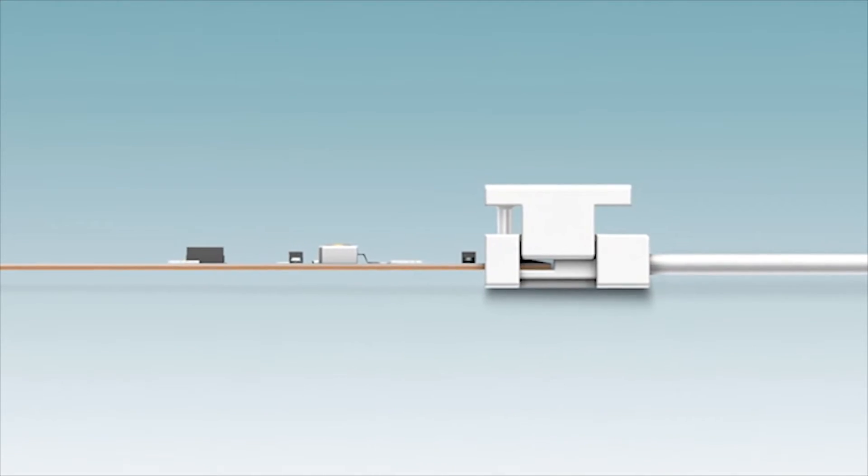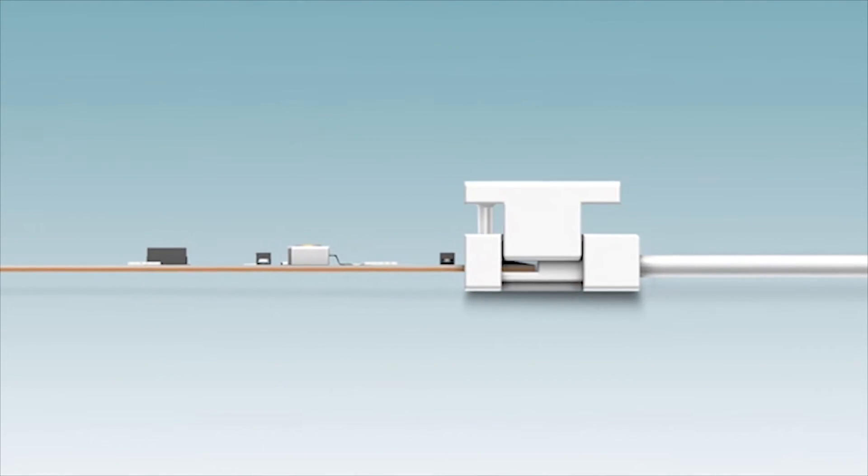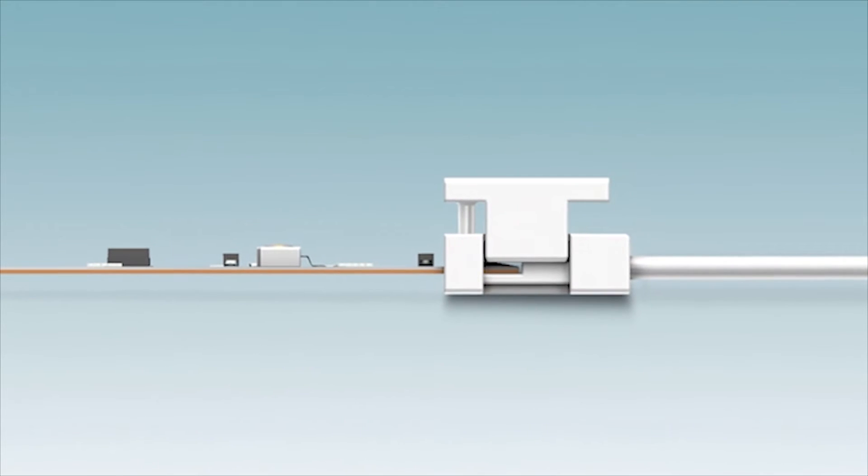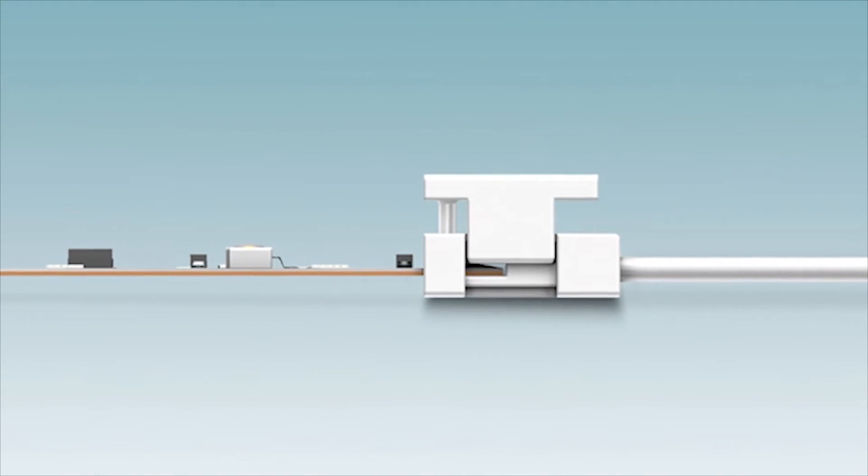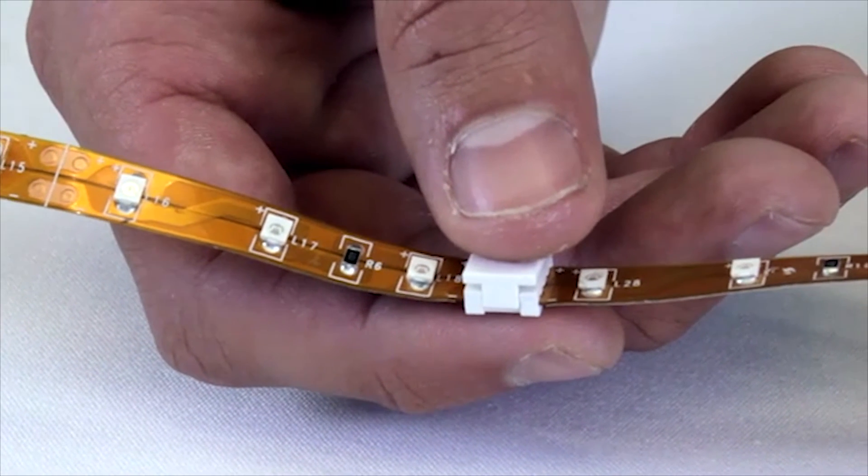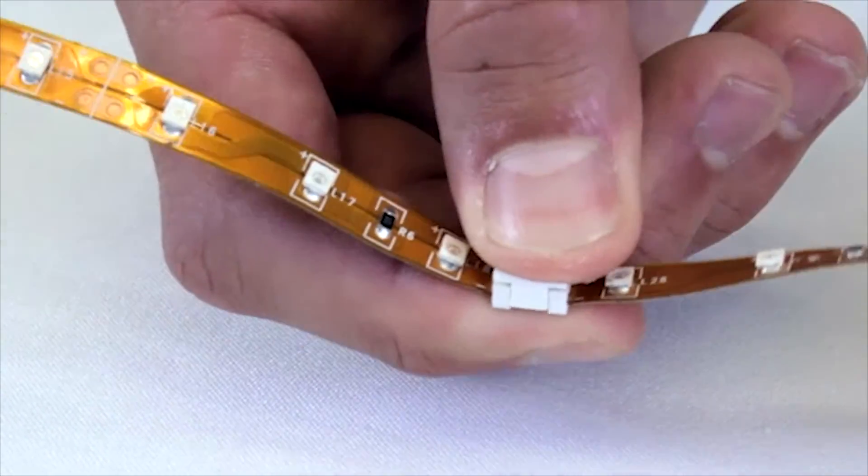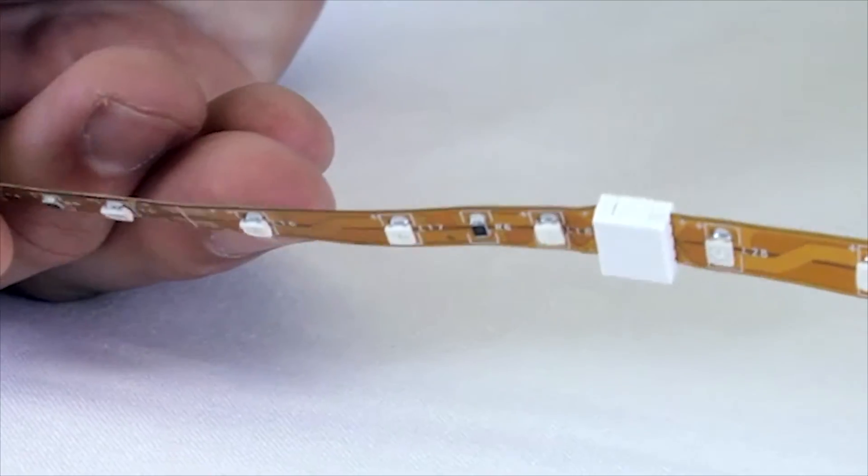To prevent loose connections, the PTF is equipped with a locking pin that, when depressed, secures the connector to the strip. To connect two LED strips, insert the LED strips into the board-to-board connector, as shown here.